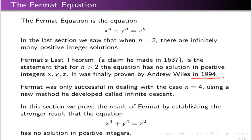In fact, Fermat was only successful in dealing with the case n equals 4, which is the case we're going to look at today. Although a lot of progress was made on the Fermat problem before Wiles' big proof in 1994. In this section, we'll establish the Fermat result for n equals 4 by proving the stronger result that x to the 4th plus y to the 4th equals z squared has no solution in positive integers.